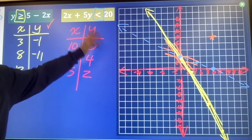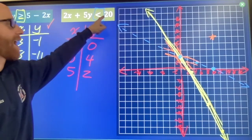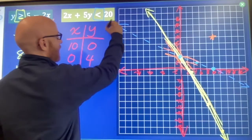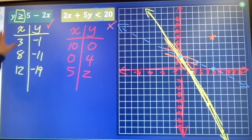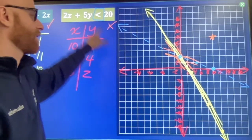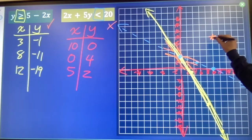I'm going to test, does that make my second equation true? True. 20 plus 50 is not less than 20. So, this point makes the yellow equation true, but it makes the red equation false. This is not the section that I want to shade.